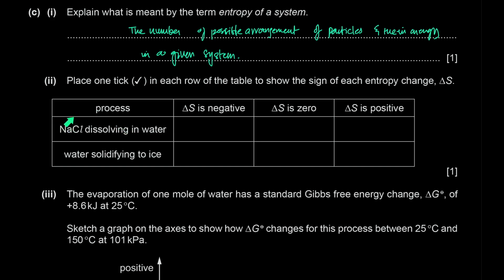For NaCl dissolving in water: entropy increases (positive ΔS) because aqueous ions have greater entropy than a solid lattice. For water solidifying to ice: entropy decreases (negative ΔS) because solid has lower entropy than liquid.